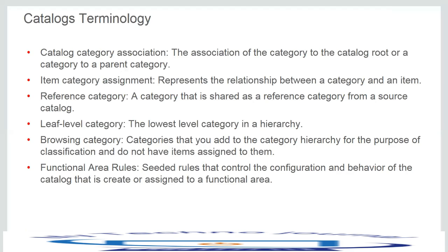The next term is reference category — it's a category that is shared as a reference category from a source catalog. Leaf level category is the lowest level category in a hierarchy. Browsing category is a category you add for the purpose of classification; we do not have items assigned to them, as items are generally assigned to the leaf level category. Functional area rules are the seeded rules that control the configuration and behavior of the catalog that is created or assigned to a functional area.